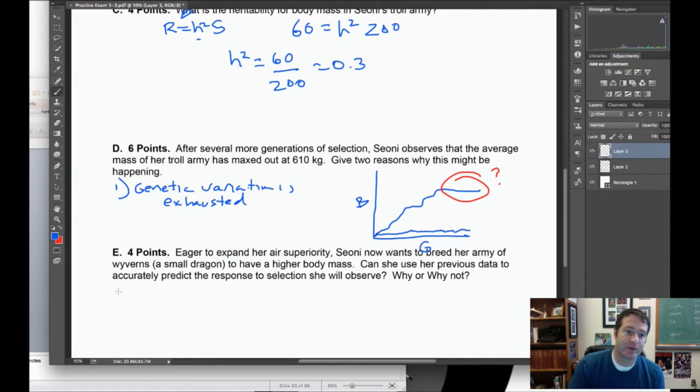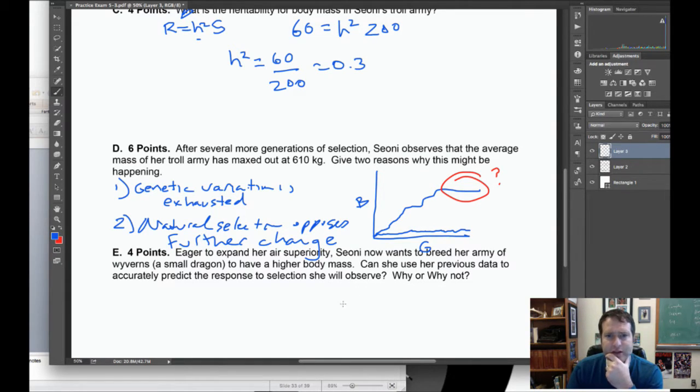The other possible explanation is that natural selection opposes further change in the trait. A lot of students will write something like the trolls are so big they can't breed anymore, but that's actually kind of a mechanistic reason related to this broader concept. It's important that you articulate this broader concept that natural selection opposes further change, because it could be they can't breed anymore, but it also could be they're so fat that they die before they're allowed to breed. So genetic variation is exhausted, natural selection opposes further change.